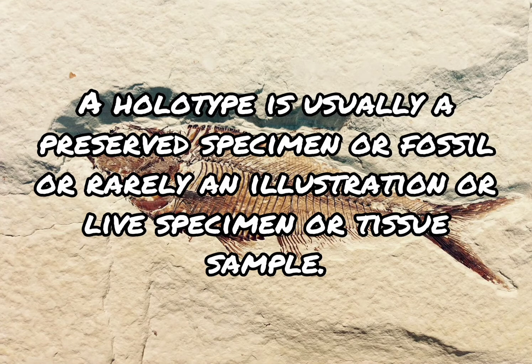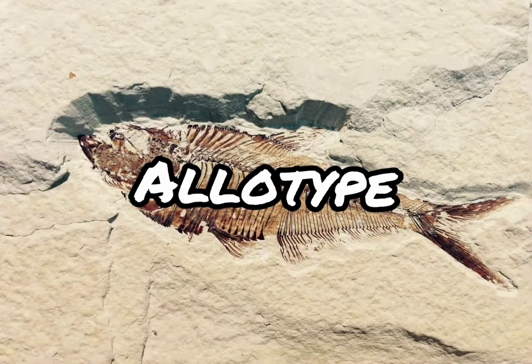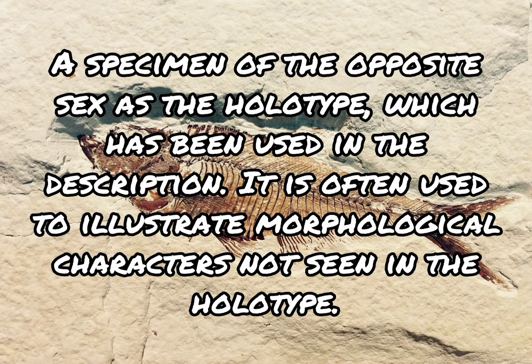A holotype is usually a preserved specimen or fossil, or rarely an illustration or live specimen or tissue sample. Allotype is a specimen of the opposite sex as the holotype, which has been used in the description. It is often used to illustrate morphological characters not seen in the holotype.